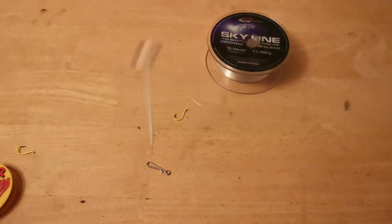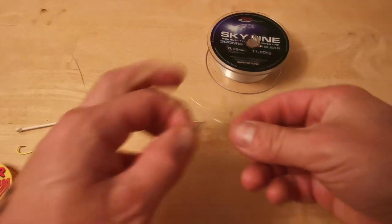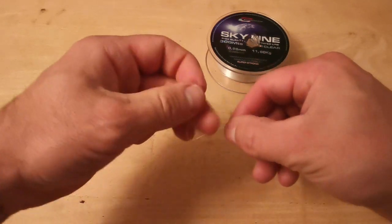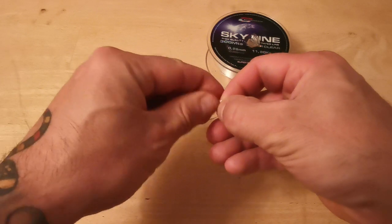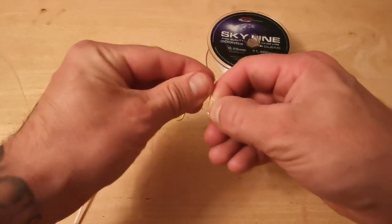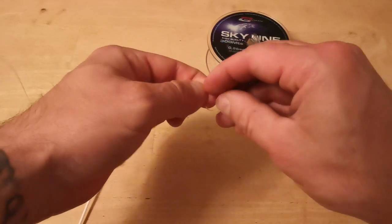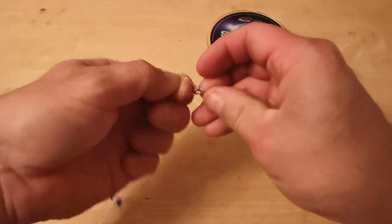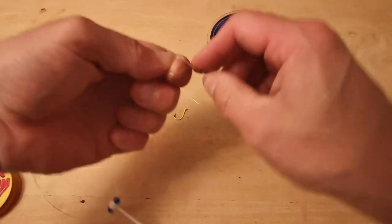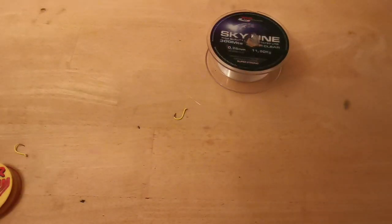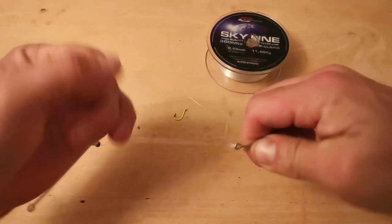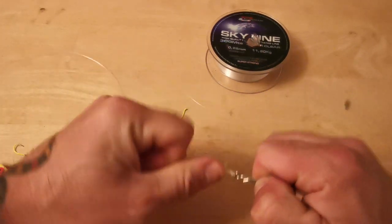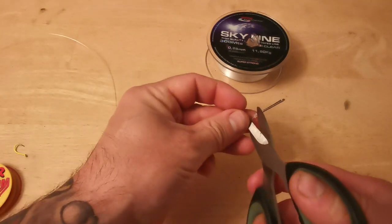Swivel to your main line at the bottom of that line there, I'm going to tie on with a uni knot again, four turns, tie on the lead link. Nice and tight on there. So that's your rig body built.